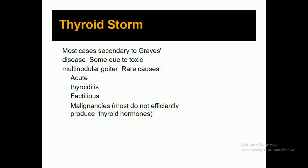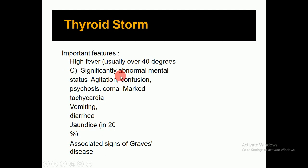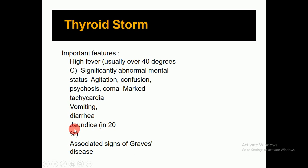Clinical features of thyroid storm: high fever usually over 40°C (103–104°F), significantly abnormal mental status, agitation, shivering, confusion, psychosis, or coma; marked tachycardia; vomiting; diarrhea; and in 20 percent of reported cases, associated signs of Graves' disease.